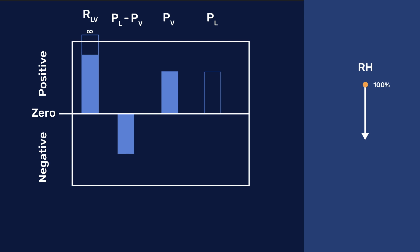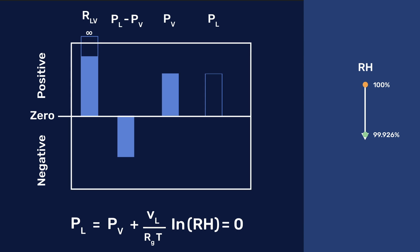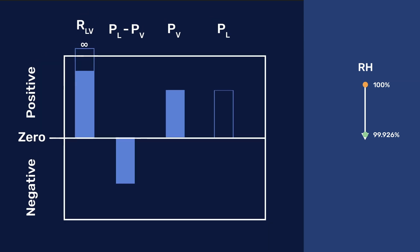According to the Kelvin equation, PL equals PV plus VL over RT times natural log of RH. And this is equal to zero when the relative humidity is about 99.9%, and PL becomes negative at lower values of RH.